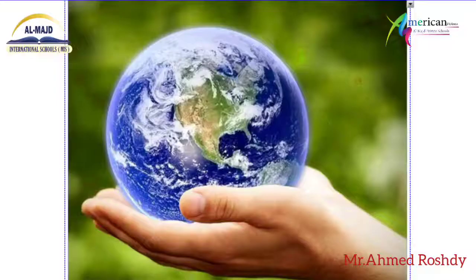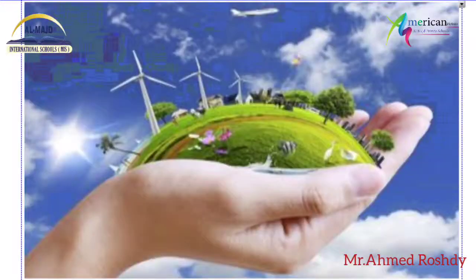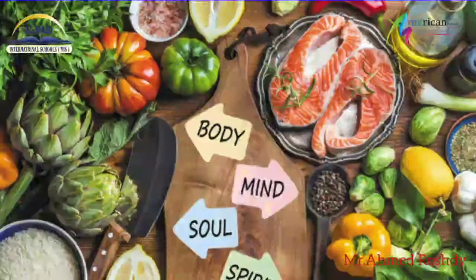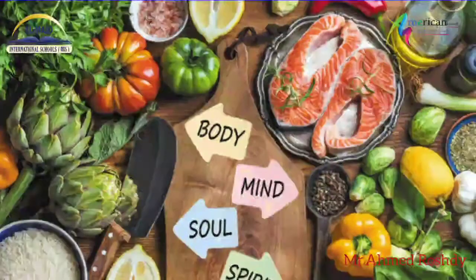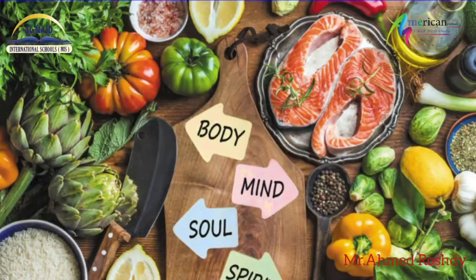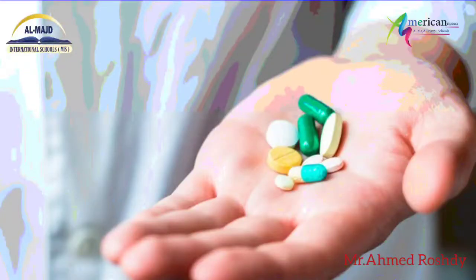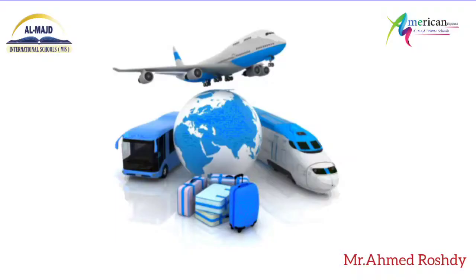Food, clothes, shelter, medicine, and transportation depend mainly on natural resources. These resources are found on the earth's surface and on the ground.